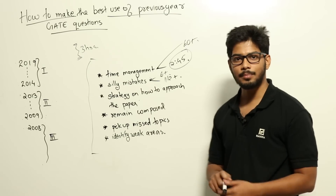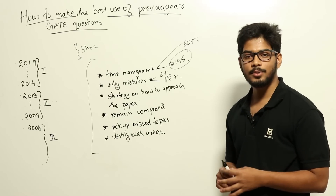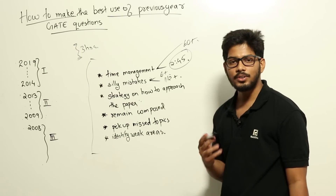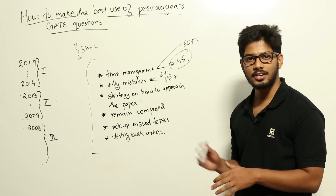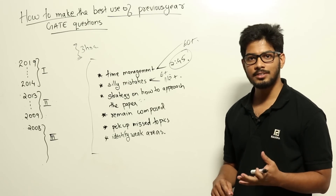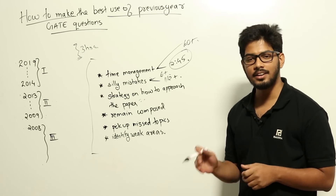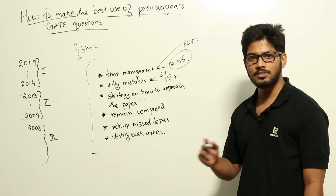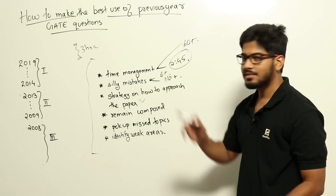The next advantage is forming your own strategy for approaching the paper. Some people solve one-mark questions first, others do two-mark questions first; some try numerical questions first. What I used to do was solve all the one-mark questions in around 30 to 45 minutes, so I had more time for the two-mark questions. Another important thing is using the 'mark for review' button efficiently — mark questions you can't answer as well as questions you've answered but want to revisit. Solving papers in this format helps you figure out the best approach for yourself.